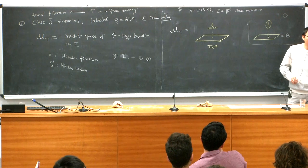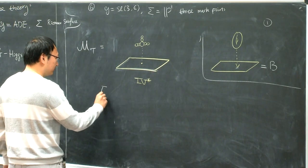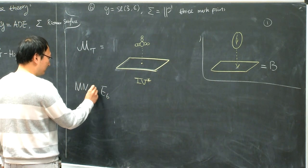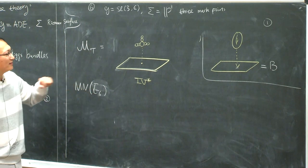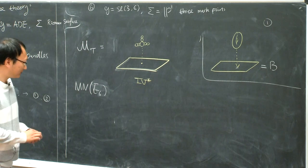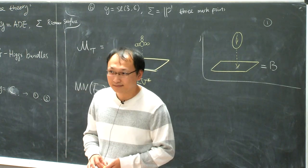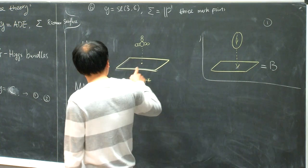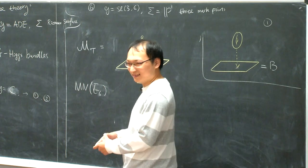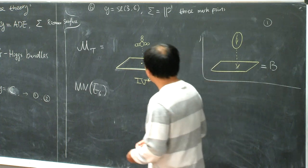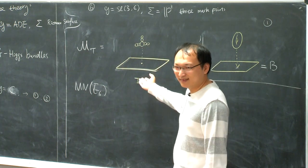If you move to the singularity, the effective theory is known as Minahan-Nemeschansky's E_6 theory, sometimes noted as MN E_6. As you'd expect, there are also MN E_7 and E_8 — all expected to be non-gauge theories. If you are away from the singularity, you get a free theory. But if you really zoom in at the singularity, you get this interacting conformal theory. So the goal is to define some invariants of either four or three-manifolds.